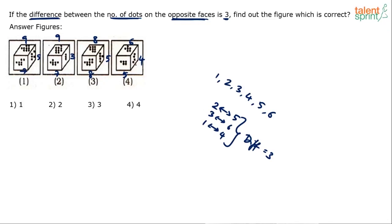If 5 is visible, then 2 should not be visible because 2 is opposite to 5. If 6 is visible, then 3 should not be visible because opposite of 6 is 3 — if 3 were visible, 6 and 3 would be adjacent faces. Similarly, if 4 is visible, 1 should not be visible. In this figure, 1 is indeed not visible, so this looks like the proper die satisfying the condition.